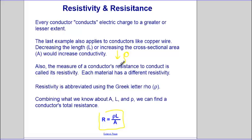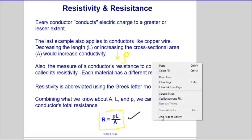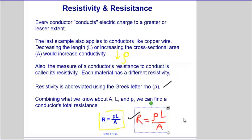Also, the measure of the conductor's resistance to conduct is called resistivity. Each material has a different resistivity. Again, it's represented with the letter rho. Combining what we know, area, length, and resistivity, we can find the total resistance. And again, just to show you, this is the equation we defined. So we'll carry that forward and use it.